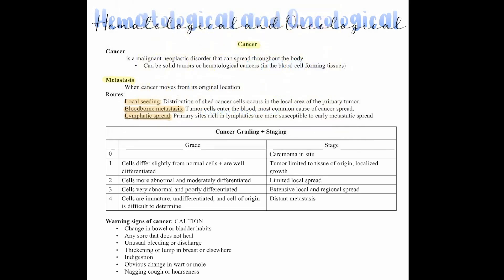Let's talk about grading and staging of cancer. Grade zero is carcinoma in situ. Stage one: cells differ slightly from normal cells and are well differentiated, and the tumor is limited to tissues of origin with localized growth — it has not metastasized.